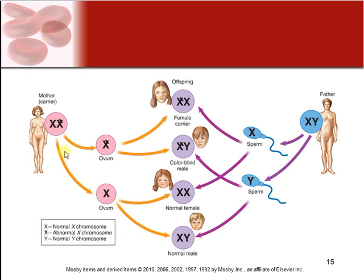If dad donates a Y and mom donates her normal ovum, the male is normal. This example represents colorblindness, which is normally a male-dominant disorder because it's sex-linked. In order for a female to have it, dad would also have to have it — his X would also carry the colorblindness marker, producing a colorblind female.